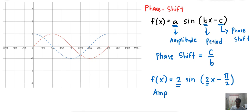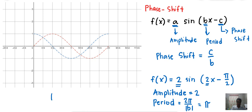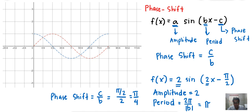So the amplitude equals 2. The period equals 2π over the absolute value of B, which is 2π over 2, so the period is π. The phase shift is C over B = (π/2) over 2 = π/4. So the phase shift is π/4, meaning we need to shift the original graph π/4 units to the right.